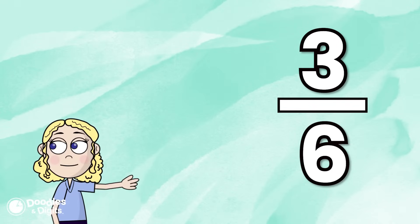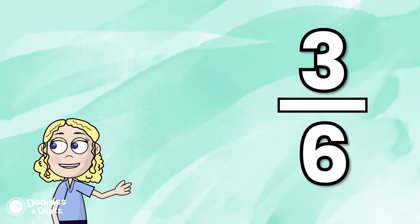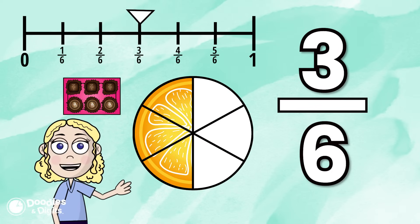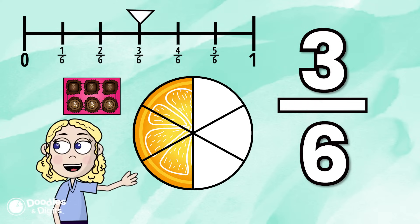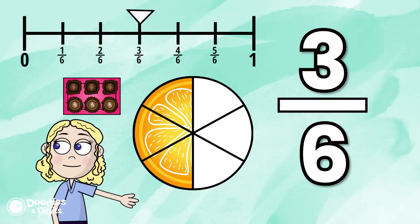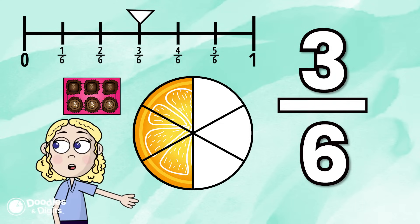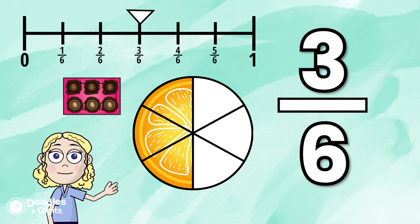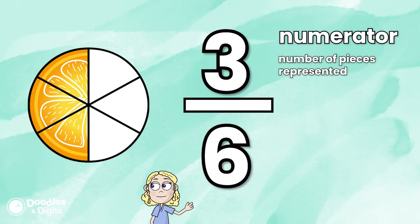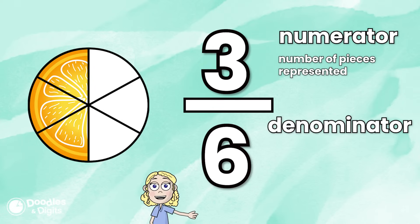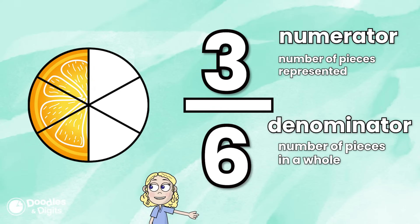Let's look at a fraction right here. Here are a couple different representations of this fraction. What do you notice? What do you think the numerator is and the denominator is? Let's look at a model that matches this fraction. The numerator is the number of pieces that is actually represented or that we have. The denominator represents how many equal pieces are in a whole.